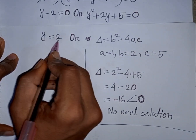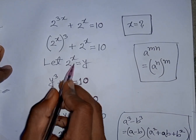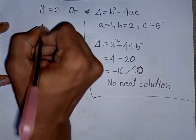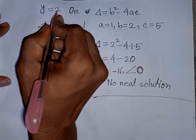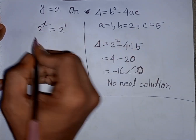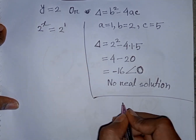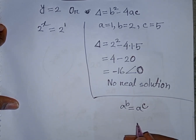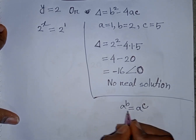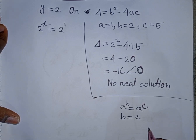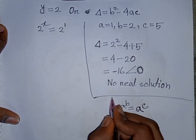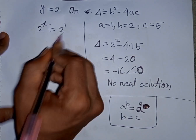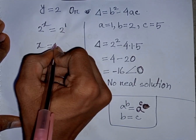Now y equals 2. Recall that we substituted y for 2 to the power x, so 2 to the power x equals 2, which is the same as 2 to the power 1. Since the bases are equal, by the exponential rule that if a to the power b equals a to the power c then b equals c, we can equate the exponents: x equals 1. This is the value of x and our final answer.